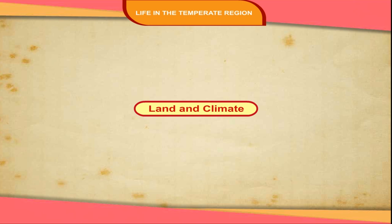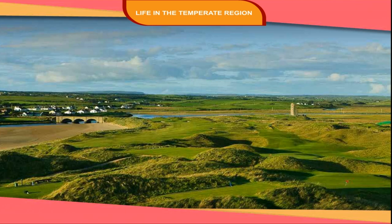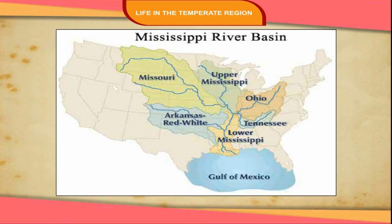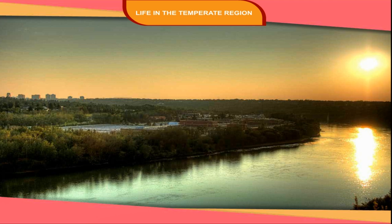Land and Climate: The prairies in North America have level or slightly rolling terrain, which rises gently towards the west. In the USA, the area is drained by the tributaries of the Mississippi, and the Canadian prairies are drained by the tributaries of the Saskatchewan rivers.